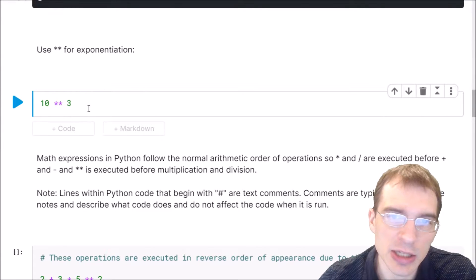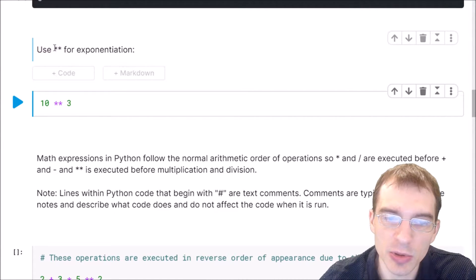If we want to do an exponentiation, we do a double asterisk. So here we're saying raise 10 to the third power, which should be 1000.